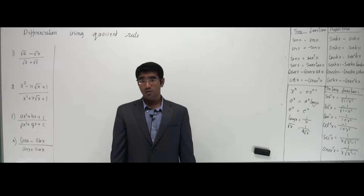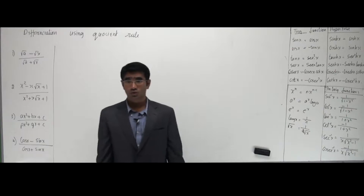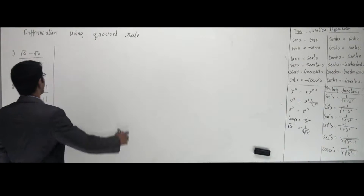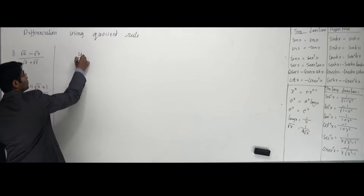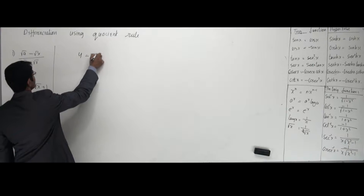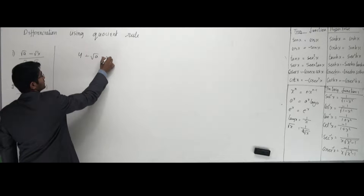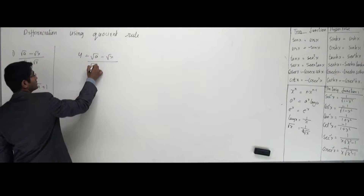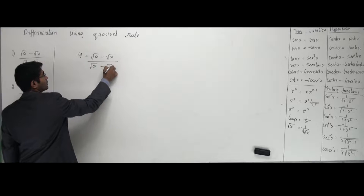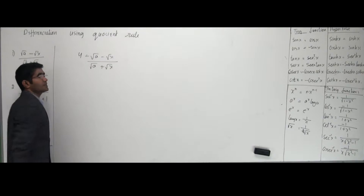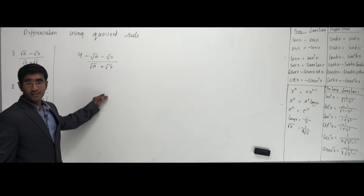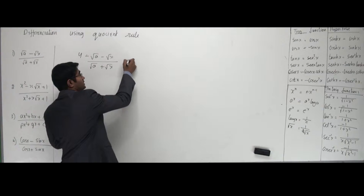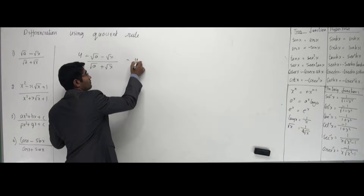All right guys, now let's work a couple more problems in the quotient rule and see how it works. I would suggest you work it out yourself. If you're not getting the problems, you can look at the board. Say it's root of A minus root of X, divided by root of A plus root of X. Again, I can see that there are two terms. Let's say this is U and V.